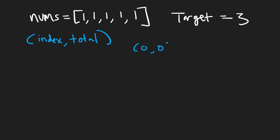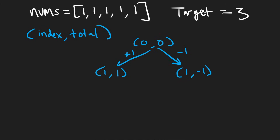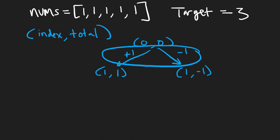Initially we'll be at (index=0, total=0). We can make a choice — we can either add that one or subtract it. If we add the one, then our index is going to be at one because we move to the next position, and our total is also going to be one because we added a one. If we did the opposite choice, we'd still end up at index one, but our total would be negative one. Since all the values in the input are one, every single decision is going to look exactly like this.